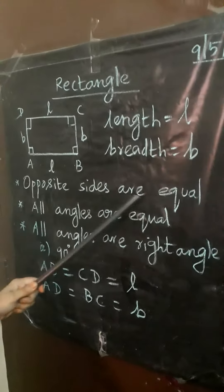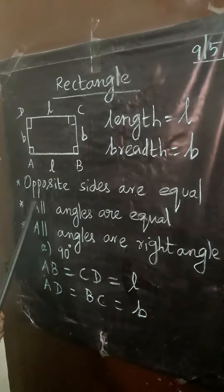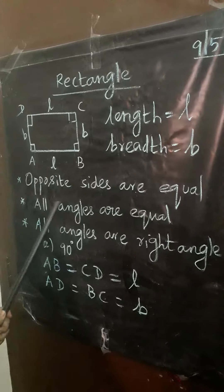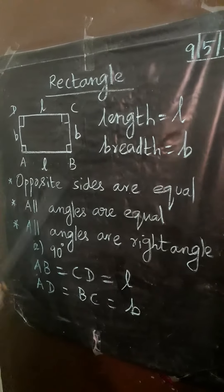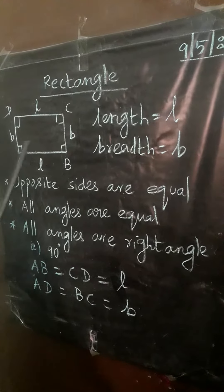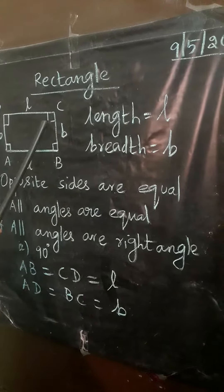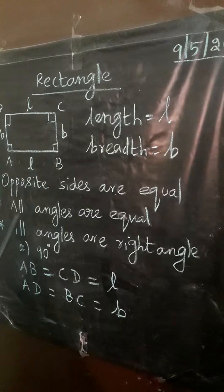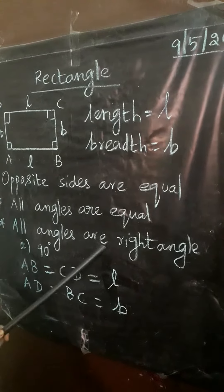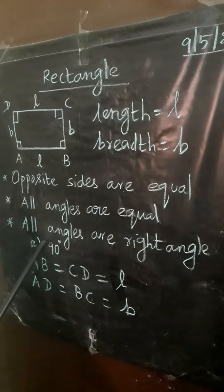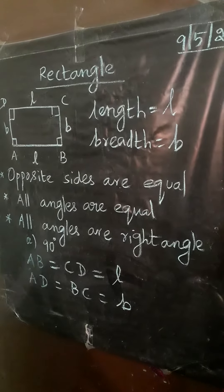So opposite sides are equal. Here all angles are equal — all angles are 90 degrees. That is a right angle. All angles are right angles, that is 90 degrees.